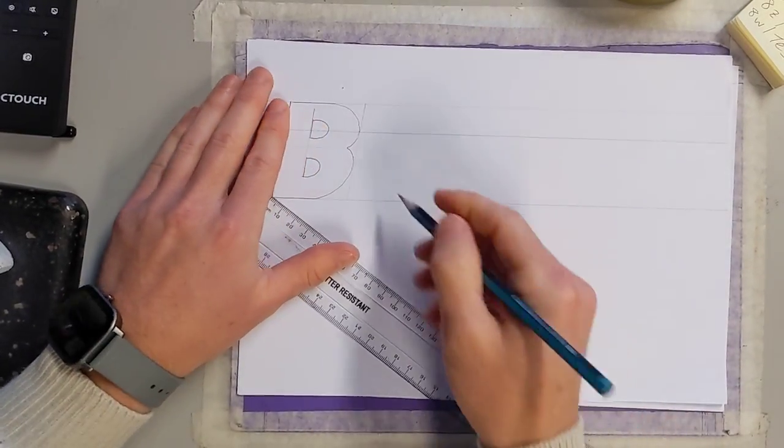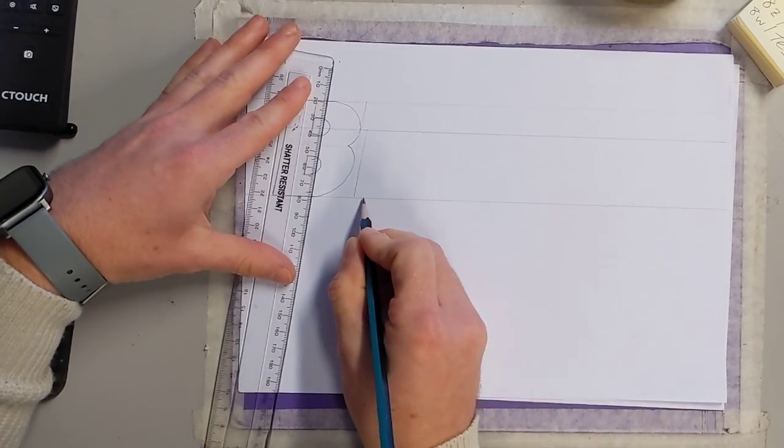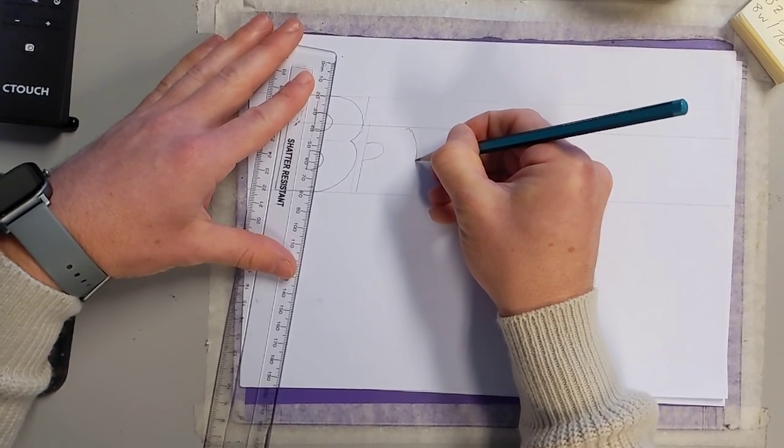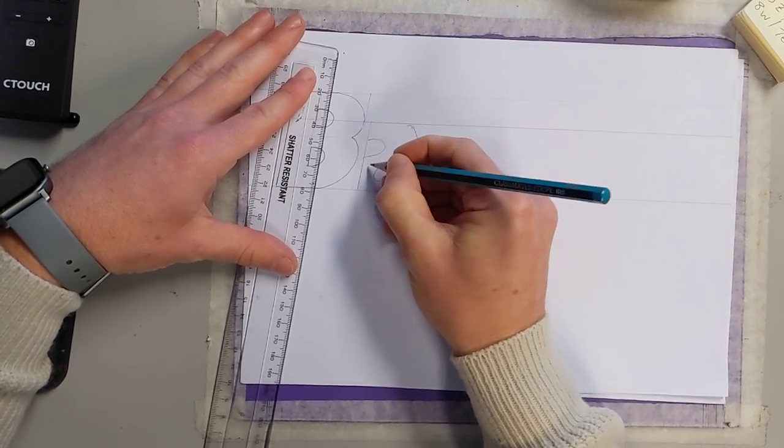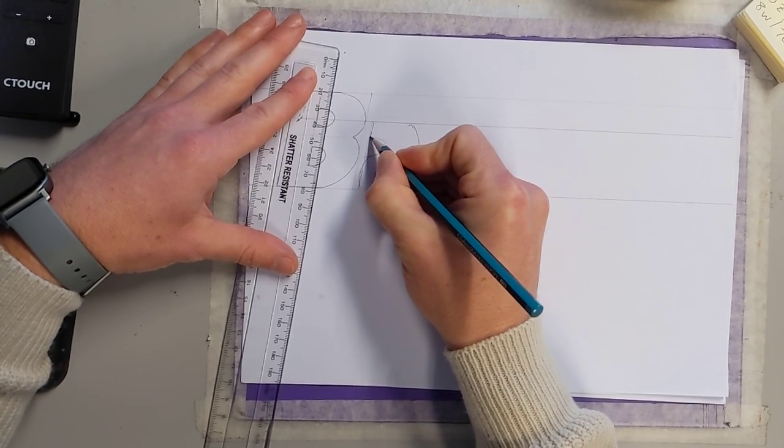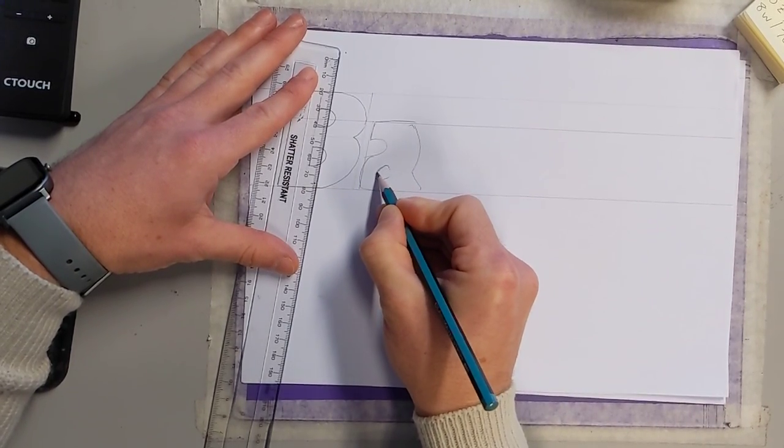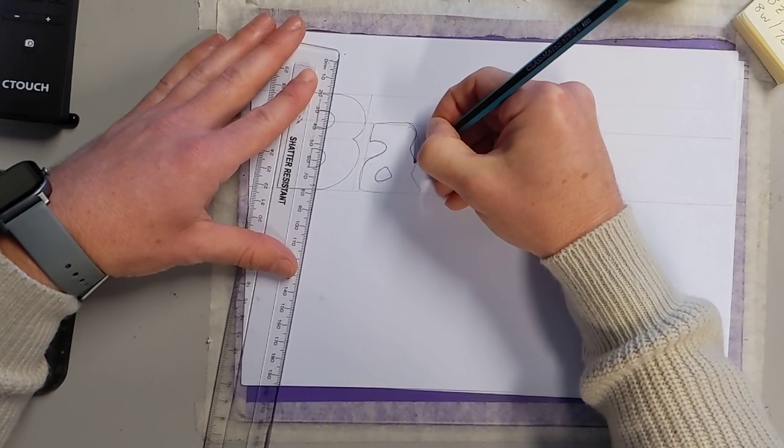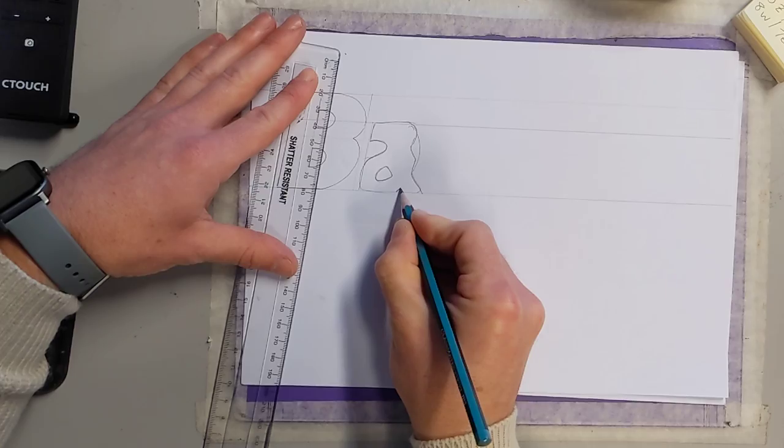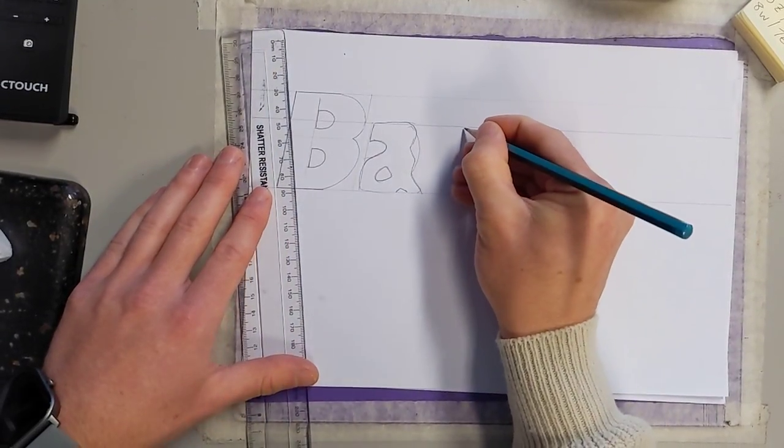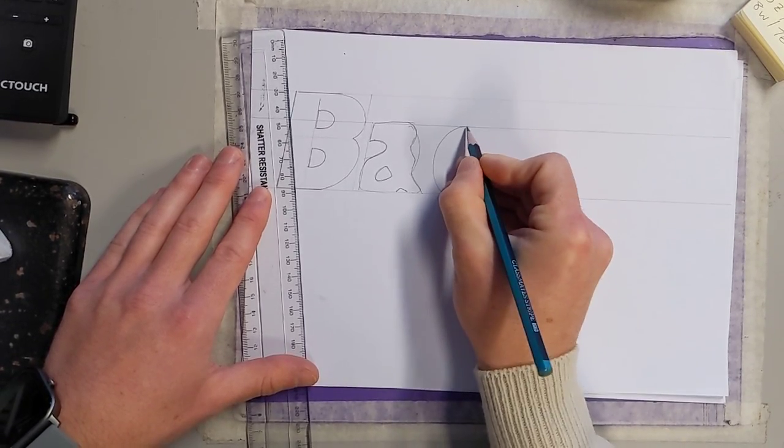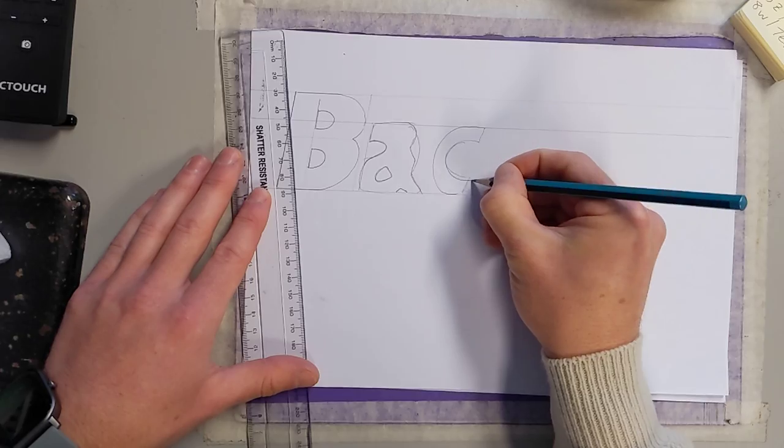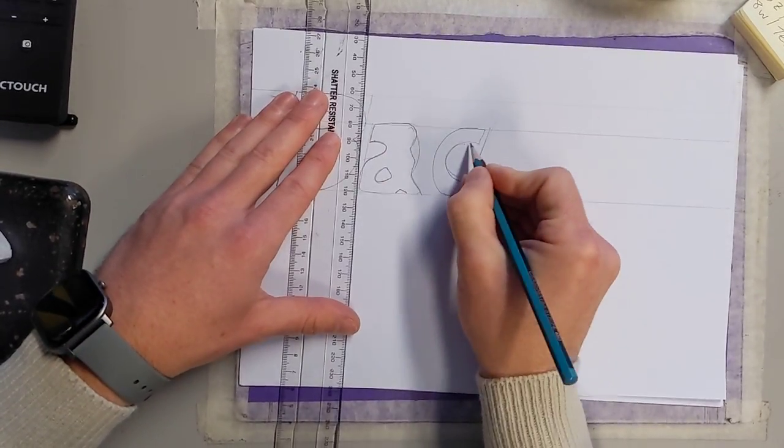So there's my B. Now if I was going to do a lowercase letter, I would draw that within the baseline to my x-height. I'll just demonstrate that. Now I'm not too fond of this, but as it's a demonstration it'll do for now. So I'm using the x-height to do my lowercase letters. I'm going a little bit rogue now doing it freehand.